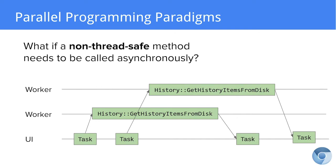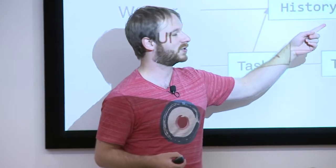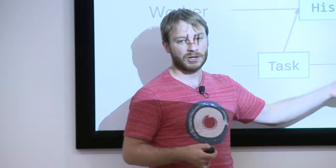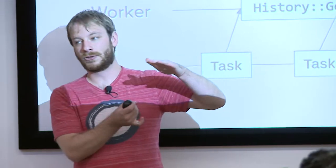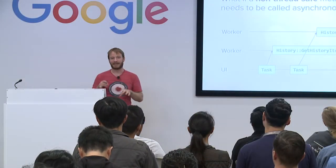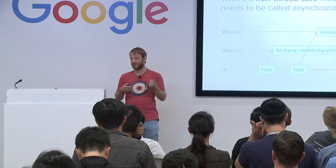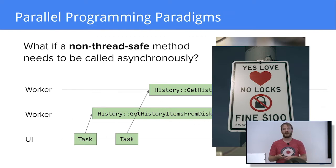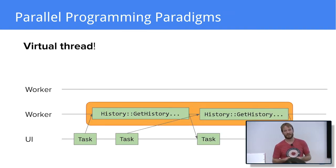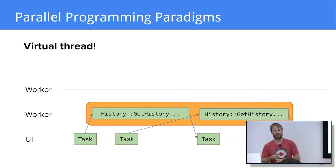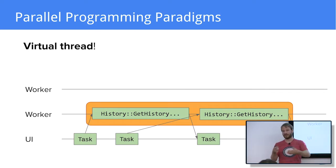What if get history items from disk is not thread safe — what if it accesses state that is not protected by any locks? When we receive two input events, we may schedule two concurrent calls in the thread pool. If there's no lock to protect the state accessed by this method, we can get data races. We could use locks, but we don't use locks in Chrome. Instead, we use a virtual thread. All tasks posted to the same virtual thread are guaranteed to run in order, one at a time. So if the two get history items from disk tasks are posted to the same virtual thread, they will not run concurrently and there will be no data races.